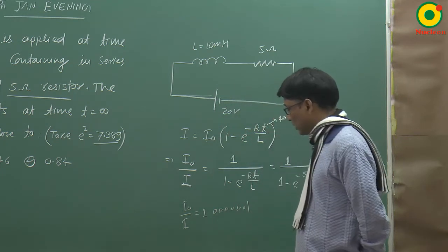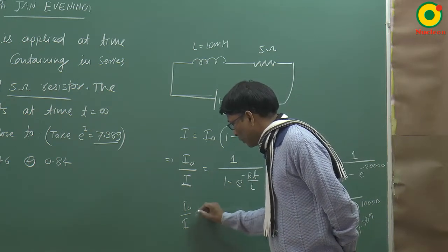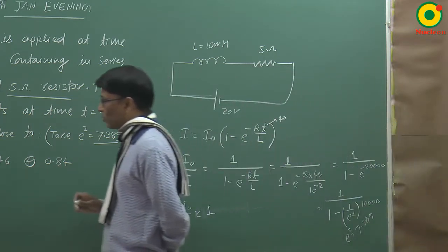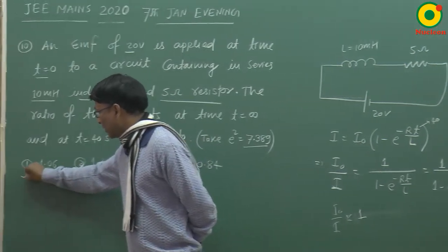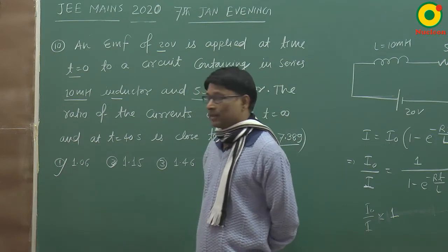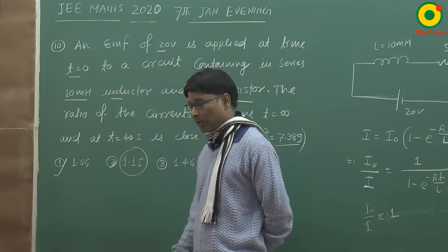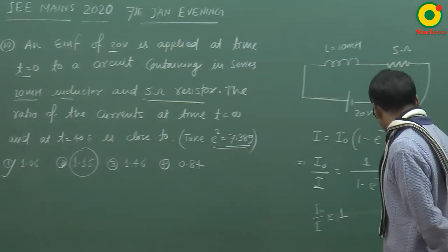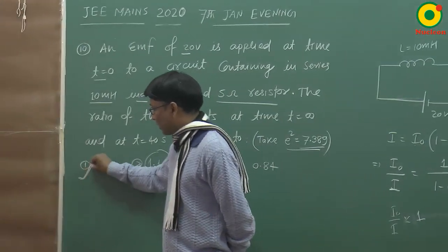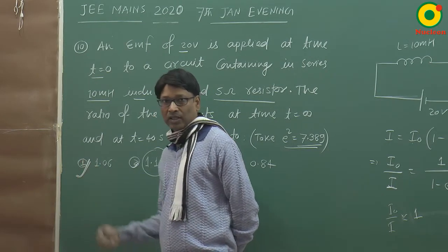ये बिल्कुल 1 के पास में आता है — 1.000... कुछ ऐसे। Approximately it is equal to 1. अब option देखेंगे तो 1 के सबसे पास वाला answer 1.06 दिया हुआ है, लेकिन NTA का answer 1.15 दिया गया है। हमारे हिसाब से correct answer 1 होना चाहिए।